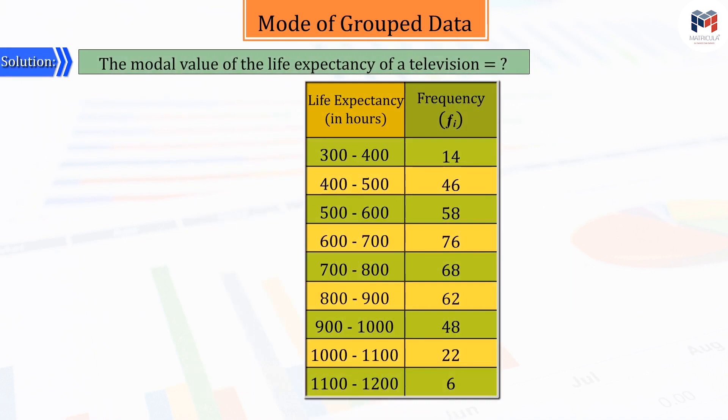We know that in order to find the mode, first of all, we must select the highest frequency. From the given frequency table, you can tell that 76 is the highest frequency here. So, the modal class will be 600 to 700, where 600 is the lower limit of the modal class, i.e. L.